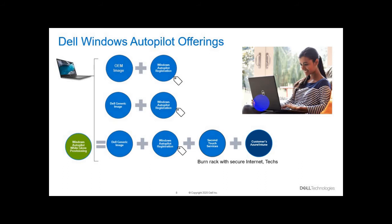The first option is the standard OEM image, which contains all Dell value-added software — trialware and utilities. When the end user receives it, Autopilot registration triggers enrollment into Intune and Azure Active Directory. Most customers prefer an image without all those OEM value-added components and trialware. The second option is the Dell generic image, which contains only the Microsoft ISO plus the device drivers for that specific model, with Windows Autopilot registration included.